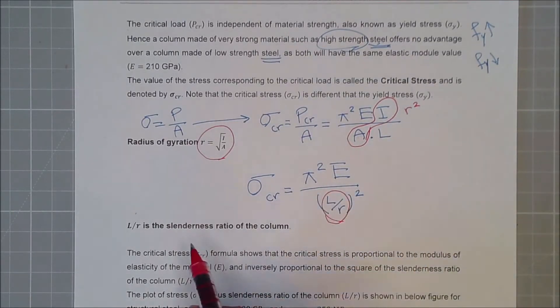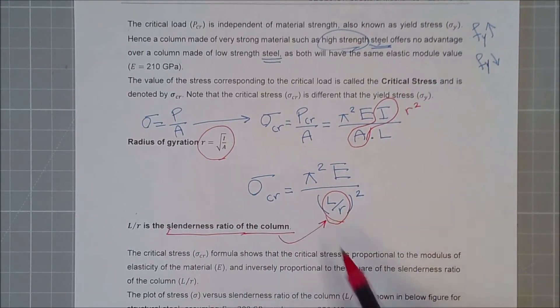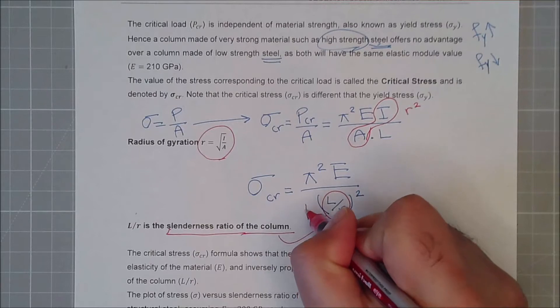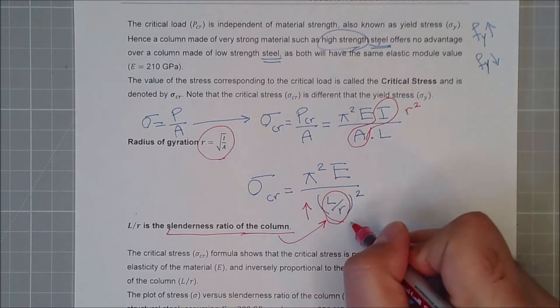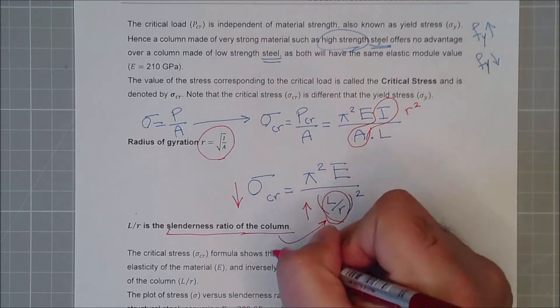This is called slenderness ratio of the column. And how does it work? The more the slenderness ratio you have, your critical stress will be reduced.